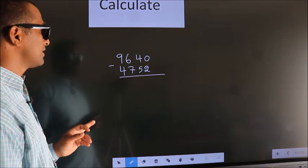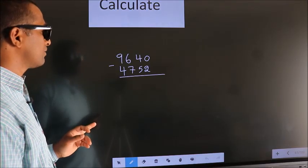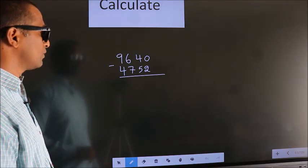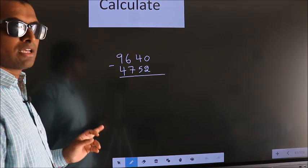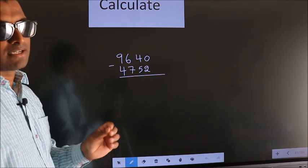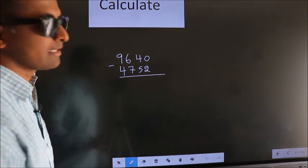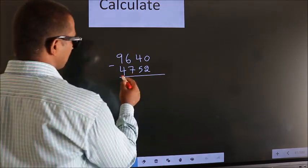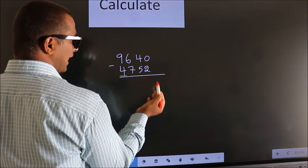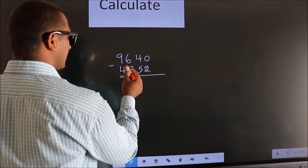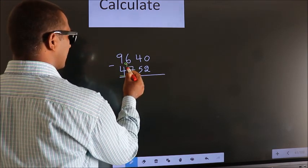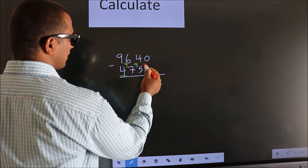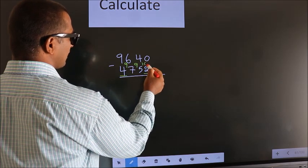Calculate 9640 minus 4752. How do we subtract faster? We should leave the first digit, and here we write 9, here 9, and for the last digit we write 10.